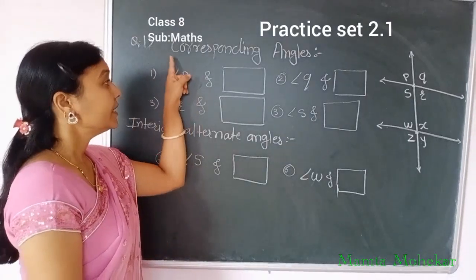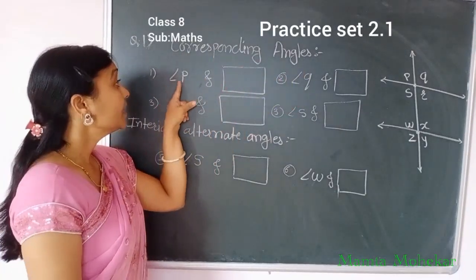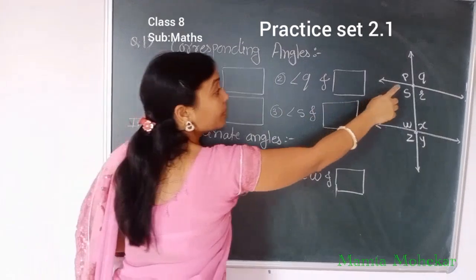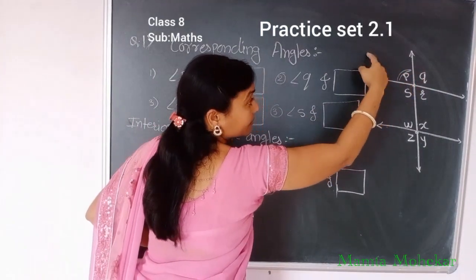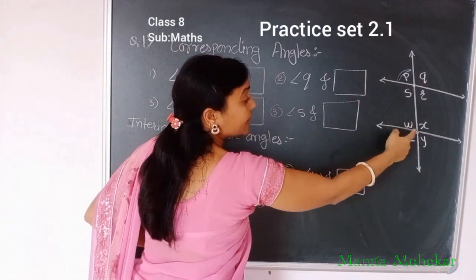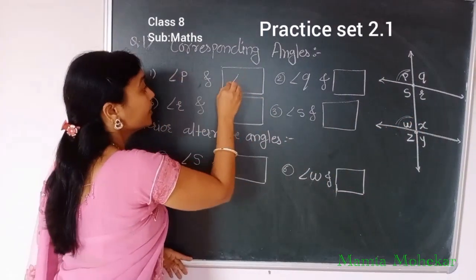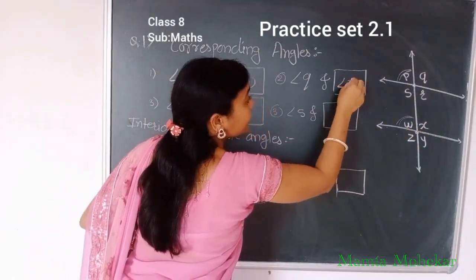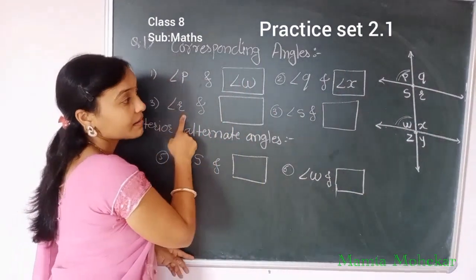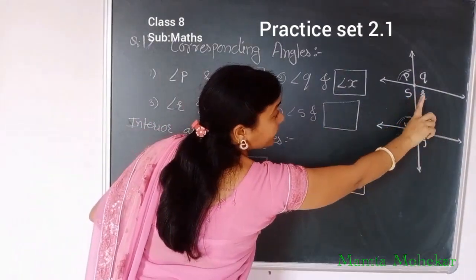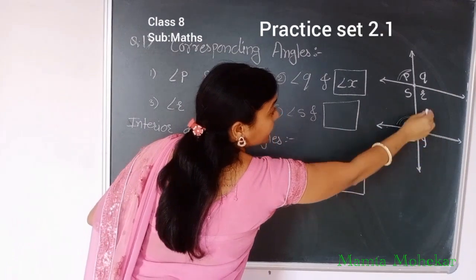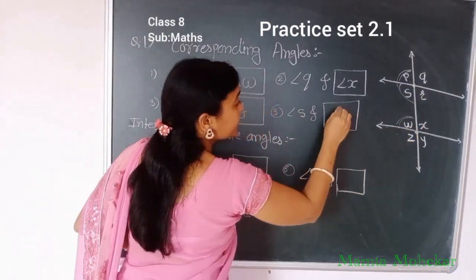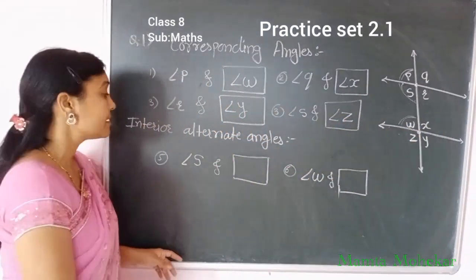See our first question: write the names of corresponding angles. Angle P corresponds to angle W — same side of transversal and same direction. Angle Q corresponds to angle X. Angle R — this is the downside of the line and right side of the transversal — corresponds to angle Y. Angle S corresponds to angle Z. These are the corresponding angles.